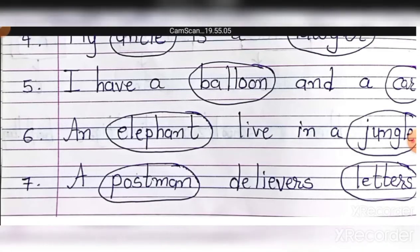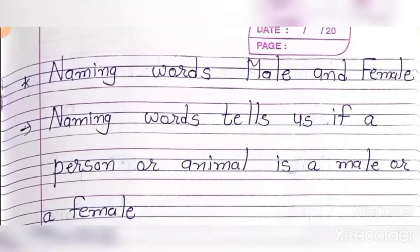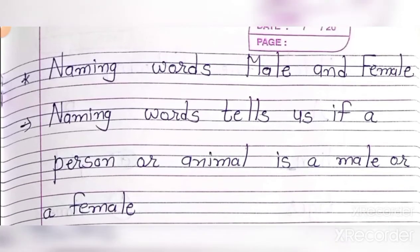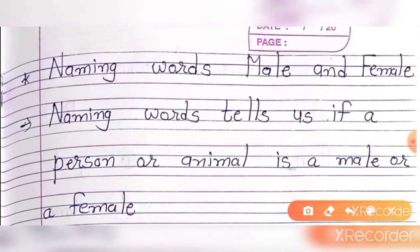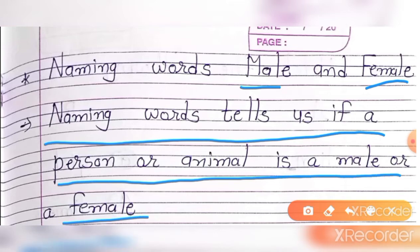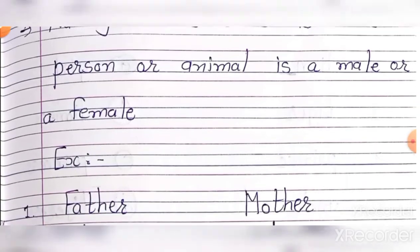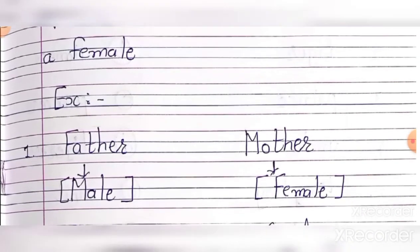Ab naming words — naming words male bhi hote hain aur female bhi hote hain. Naming words tells us if a person or animal is male or female. Toh person matlab joh aadmi hote hain, animal matlab janvar hote hain — woh male bhi hote hain aur female bhi hote hain.